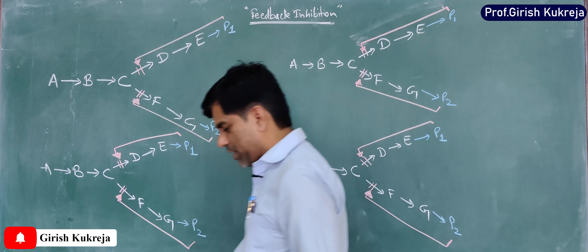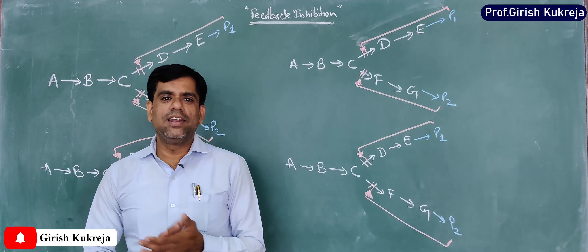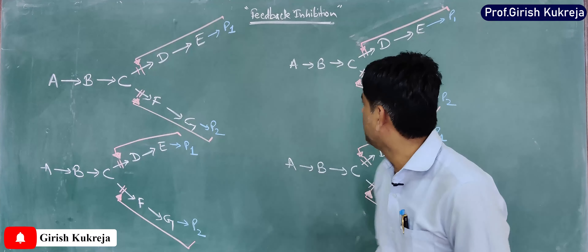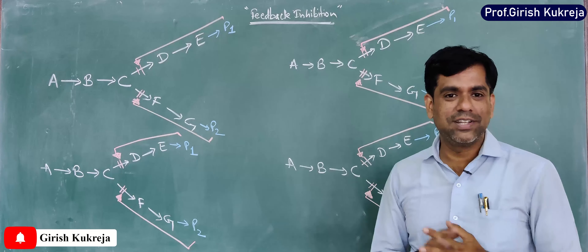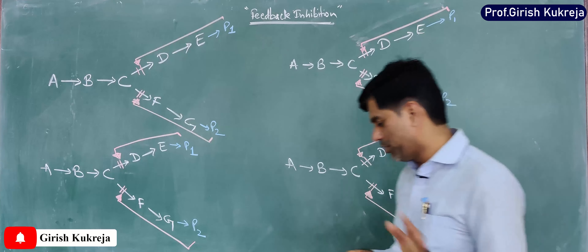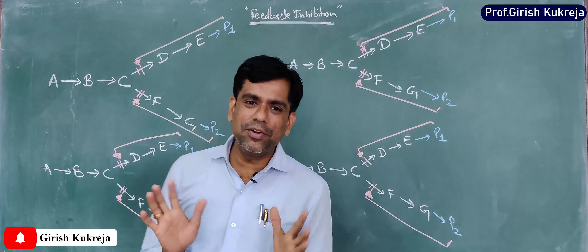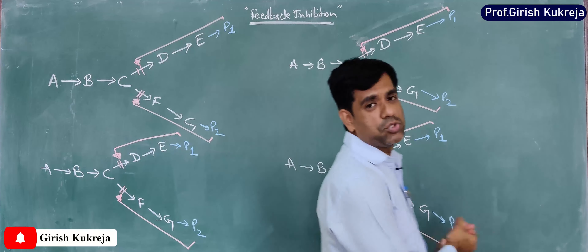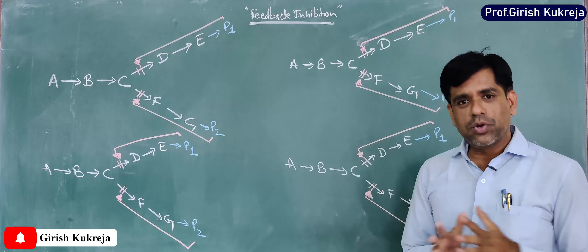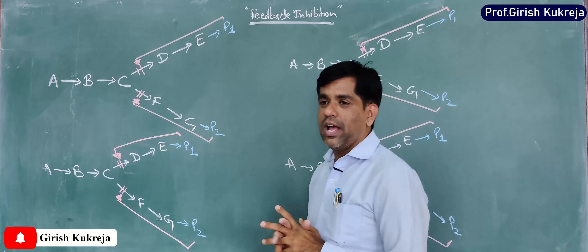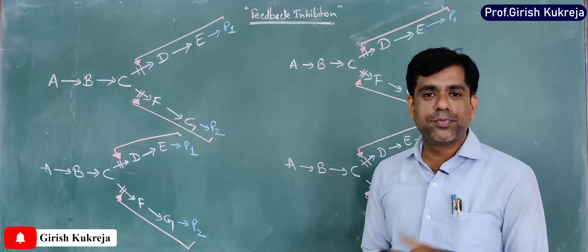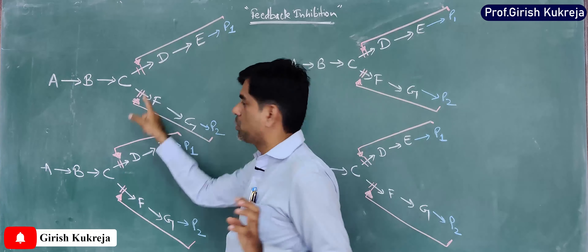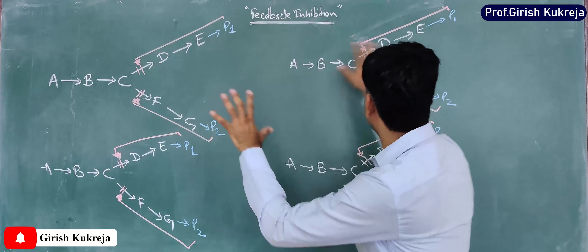Hi friends, you're back with me, Professor Girish Kukreja. In our earlier lecture we were talking about feedback inhibition. Looking at those many pathways you might wonder what is going to happen — don't worry. Talking about this feedback inhibition, when it comes to a branched pathway, one way to control the excess working of this pathway when the end products are in excess is to control at the branch point.